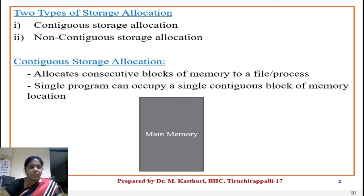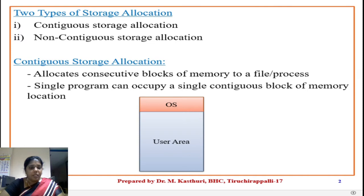First, you learn about contiguous storage allocation. Main memory is divided into two partitions. One portion of memory is permanently allocated to the operating system, and the remaining portion of memory is allocated to the user job. A system allocates a consecutive block of memory locations to a file or process; that is, a single program can occupy a single contiguous block of memory.